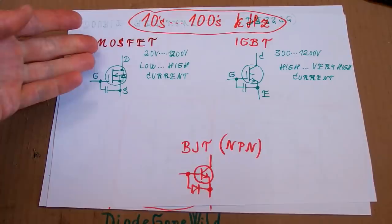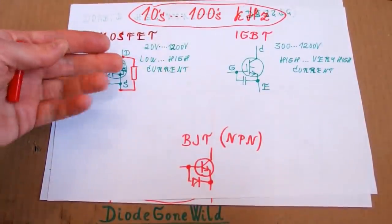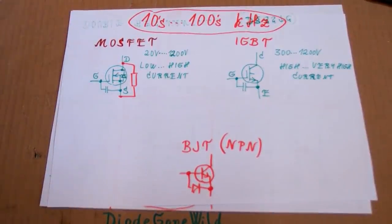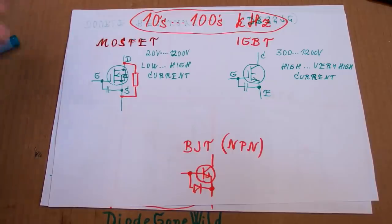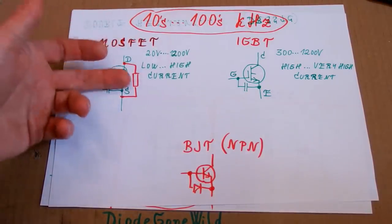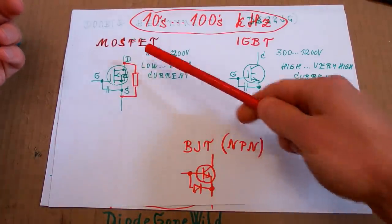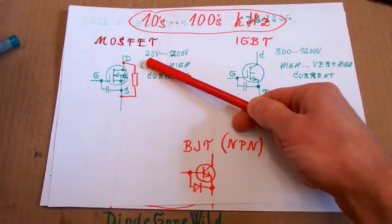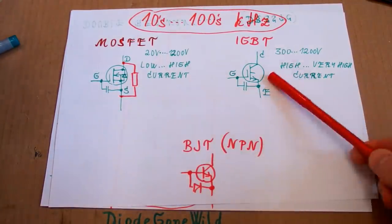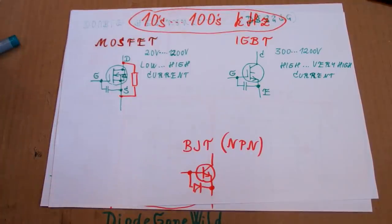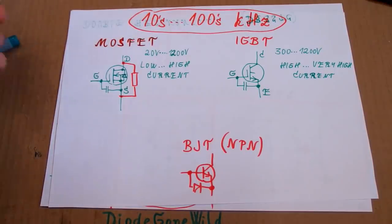When a MOSFET is on it acts as a resistor, so the voltage drop grows linearly with the current through it. The conductive losses depend on this on-state resistance, so when choosing a MOSFET you want this resistance to be as low as possible. For low voltages MOSFETs are better than IGBT transistors because low voltage ones have super low resistance and can be much more efficient. Low voltage ones can have resistance as low as just 1 or 2 milliohms, so they are super efficient for low voltages.